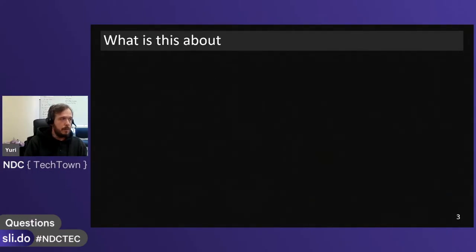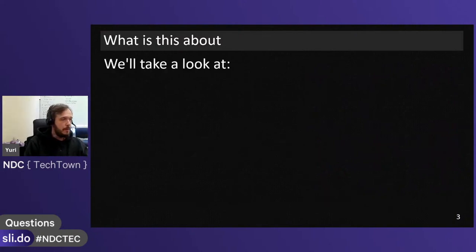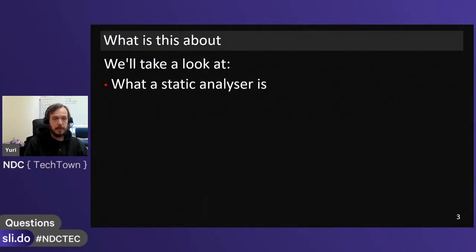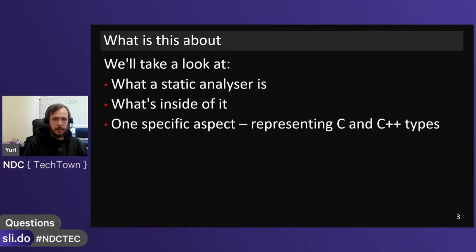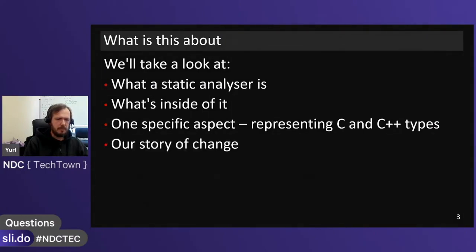What is this talk about? Several things. First, if any of you don't know yet, I'll briefly tell you what static analysis is and why it's useful, what it has inside and how it's built. We're going to focus on the type system for C and C++, because that's the hot topic at PVS Studio right now. I'm working on it intensively, and I'll give you a small comparison of what it used to be, what it's going to be, and what stage it's at now.